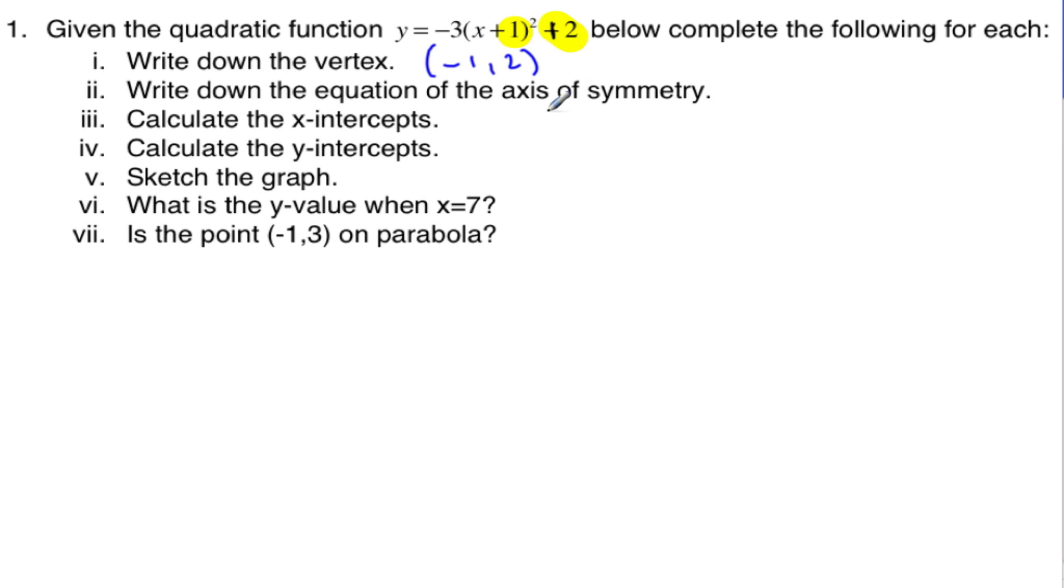Axis of symmetry - well that comes from our vertex. I know it goes through the vertex and so it's always x equal to negative 1, whatever this value here is. Whatever this value here is makes my axis of symmetry and that's our vertical line.